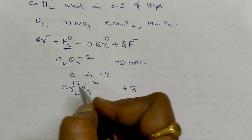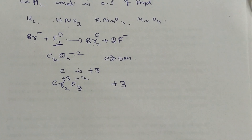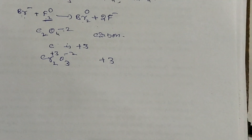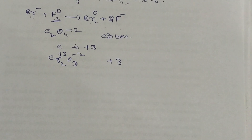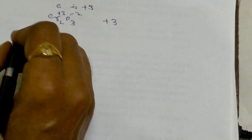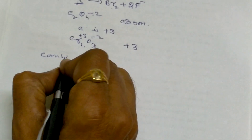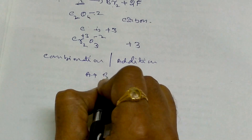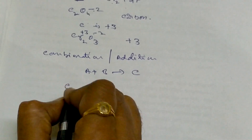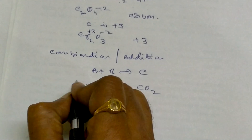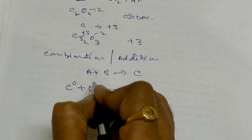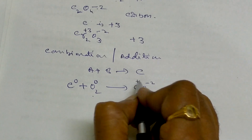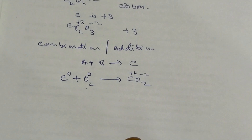Now we go to the different types of redox reactions. The first type is a combination reaction — some books call it addition. The general formula is A plus B equals C. Example: carbon plus oxygen gives CO₂. Carbon is 0, oxygen is 0 as elements. In CO₂, oxygen is minus 2 and carbon is plus 4. This is a typical combination redox reaction.